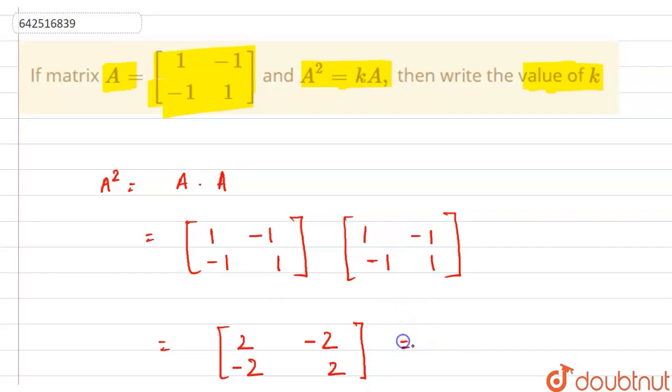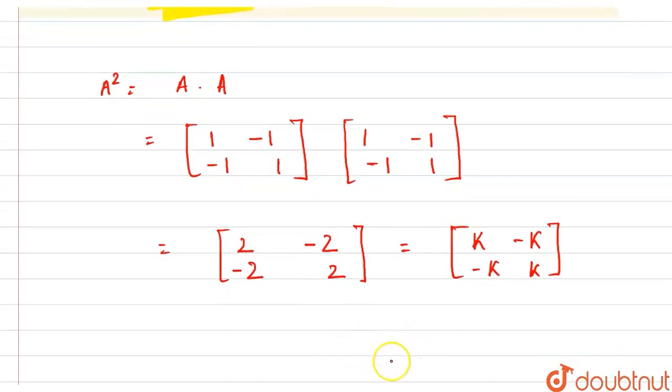So this will be our A squared. And this is given by kA. So kA equals, we will multiply k with each element. So this is equivalent to this. So from here, after equating all the elements, we get that k equals 2. So this will be our answer. Thank you.